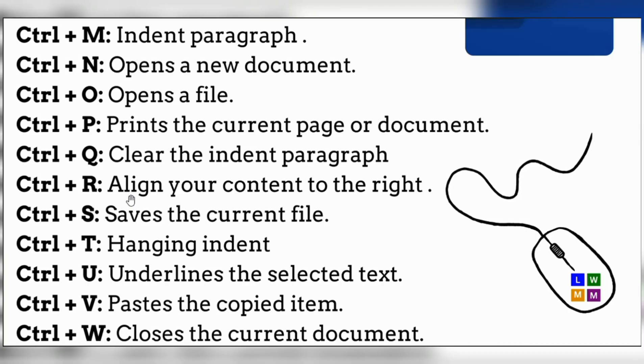For aligning your content or text to the right side of the document, select the content or text and press CTRL plus R.